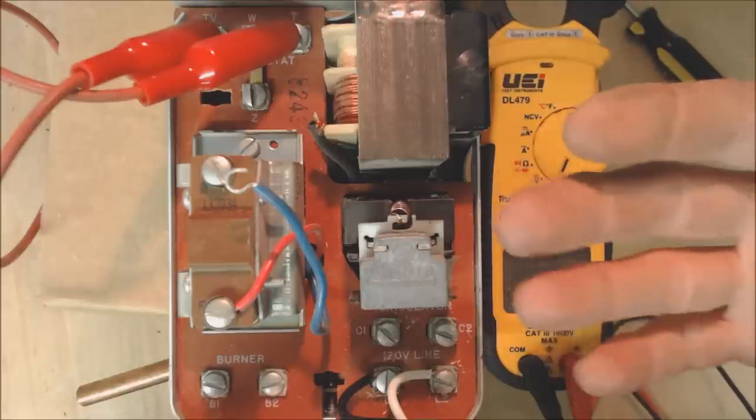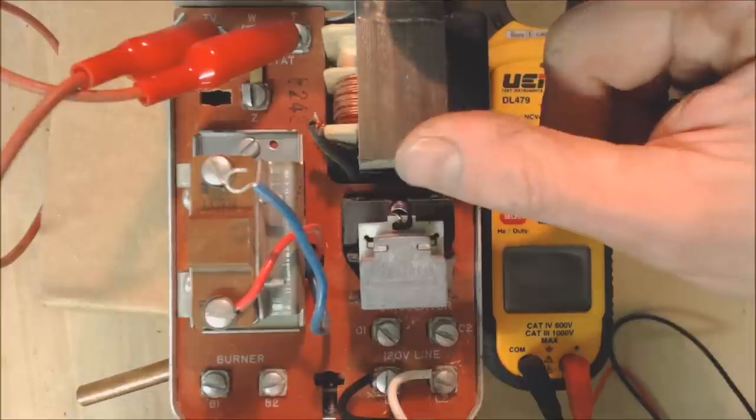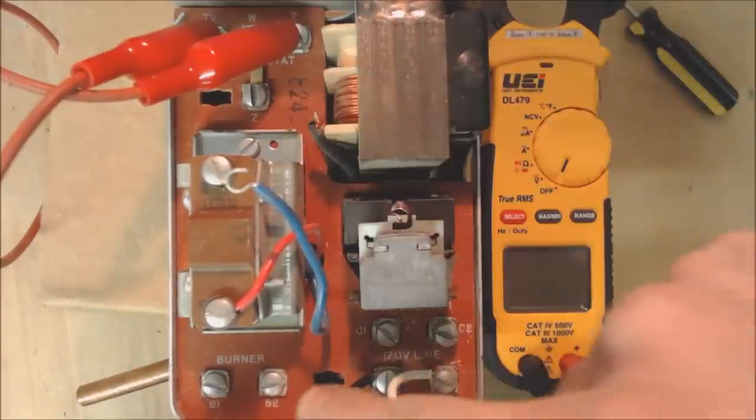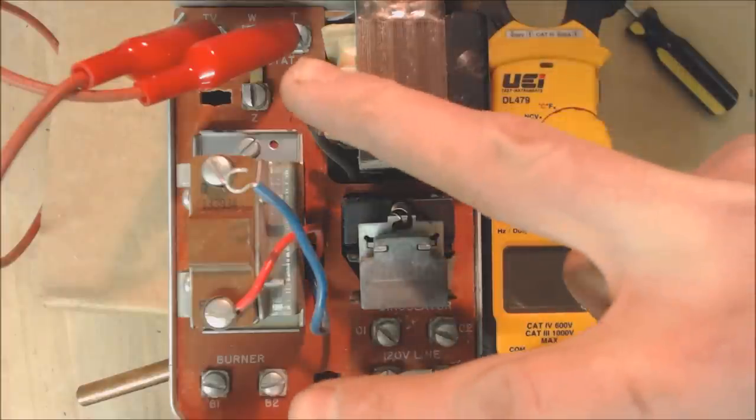Some of the things that could go wrong with this relay - the transformer itself could go bad, and you can verify that by just reading from Z to B2 to see if you have 24 volts there.